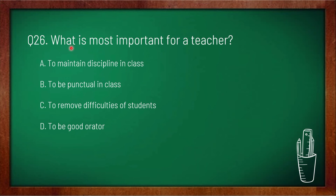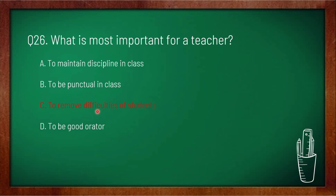Question 26: what is most important for a teacher? Option A: to maintain discipline in class, option B: to be punctual in class, option C: to remove difficulties of students, option D: to be a good orator. The correct answer is option C — to remove the difficulties of students is the most important thing for a teacher.